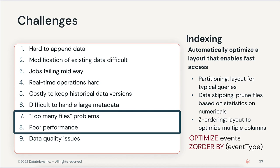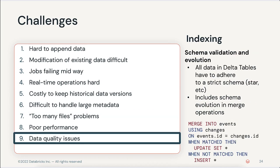How do we deal with data quality issues? Delta comes with schema validation. This means that all data that goes into a Delta table must adhere strictly to a schema. If it doesn't, we move that data into quarantine where you can go look at it later and fix it.